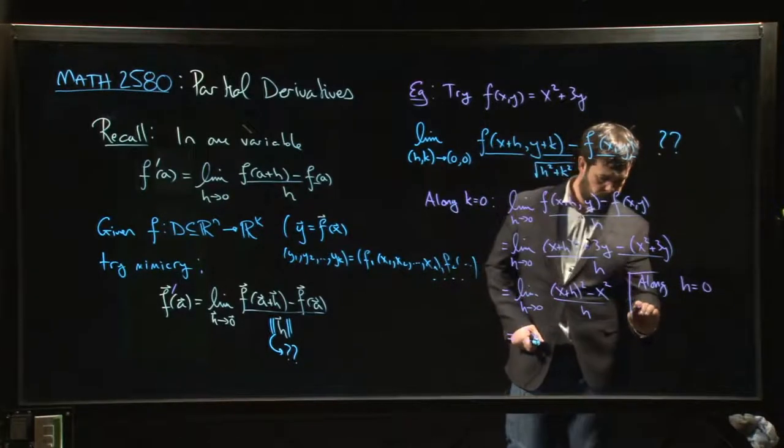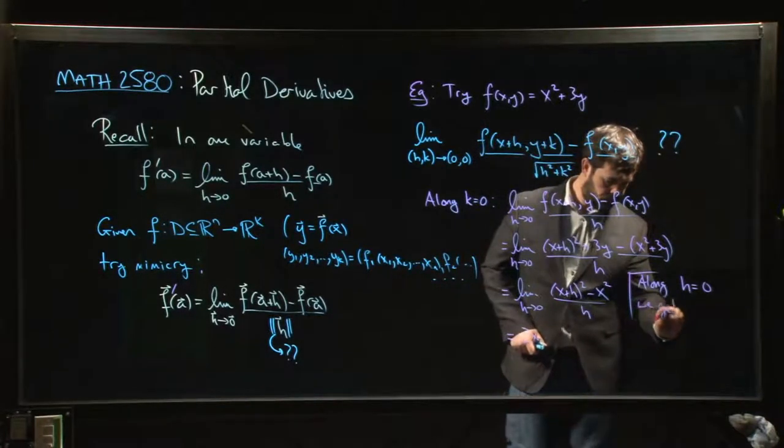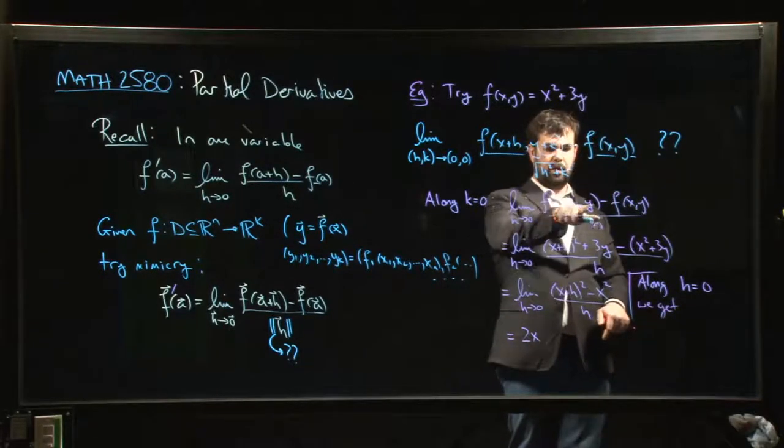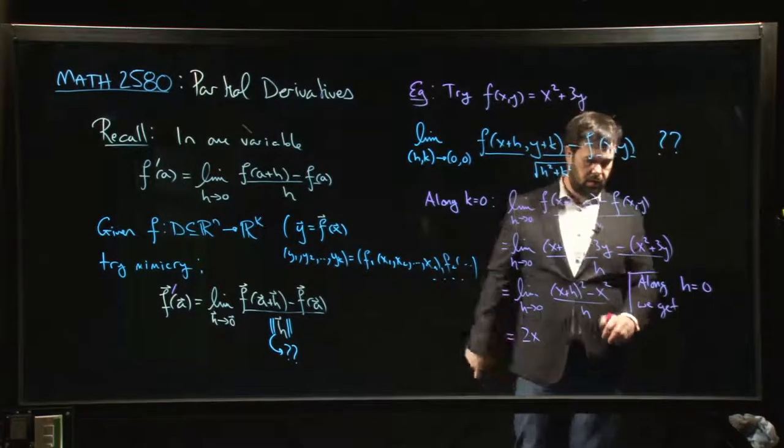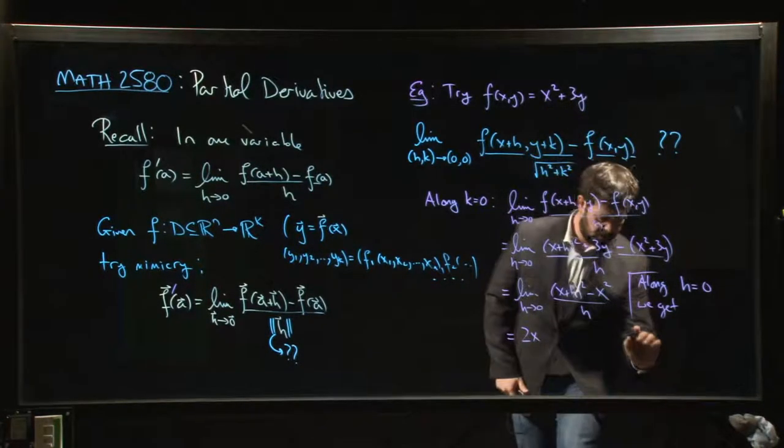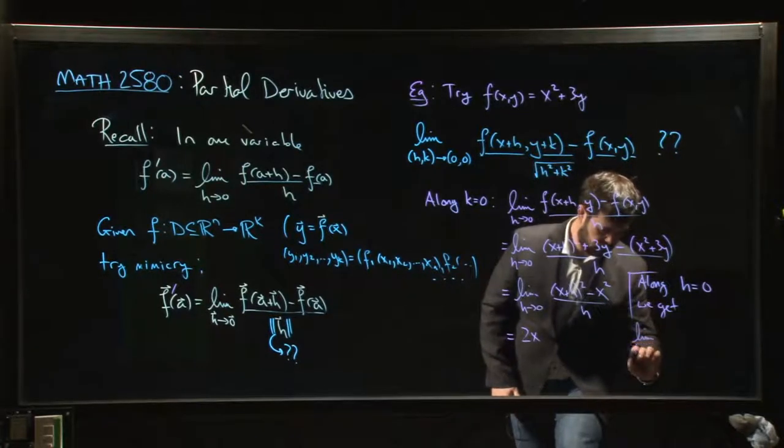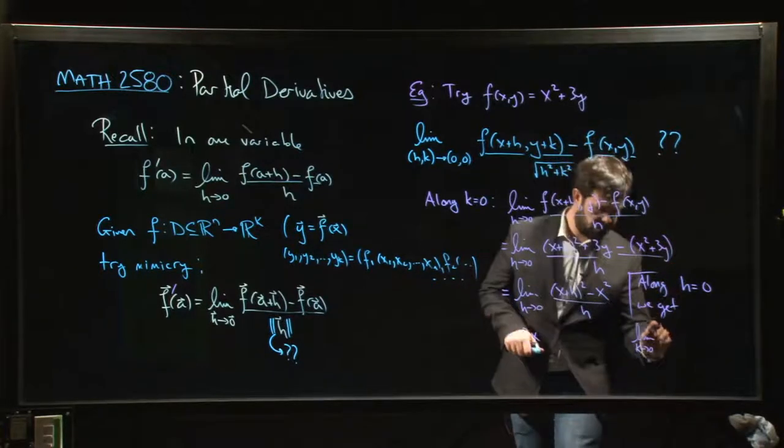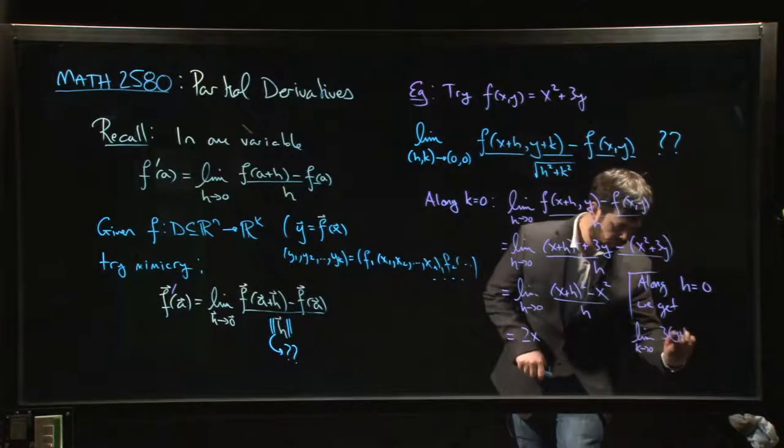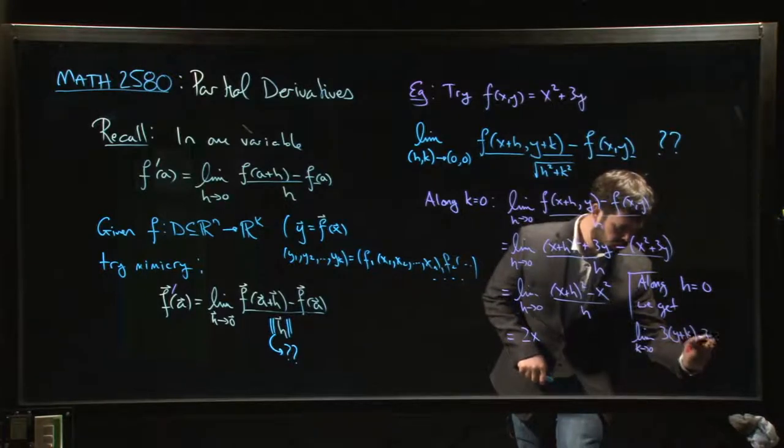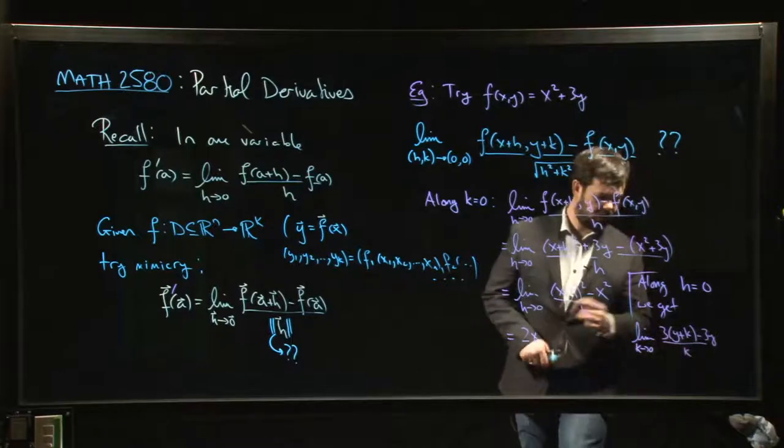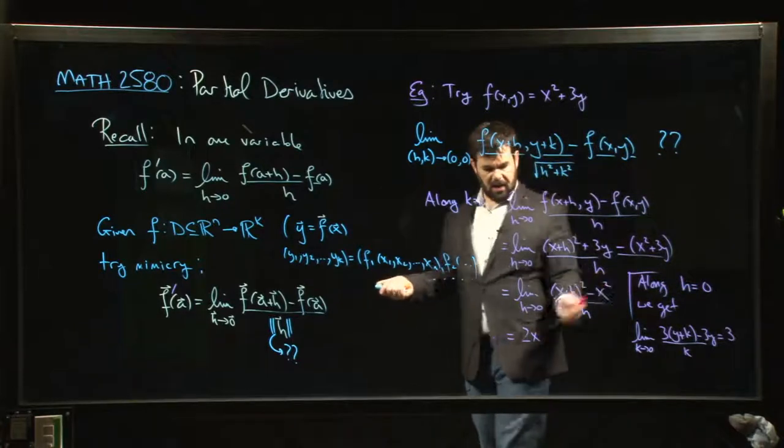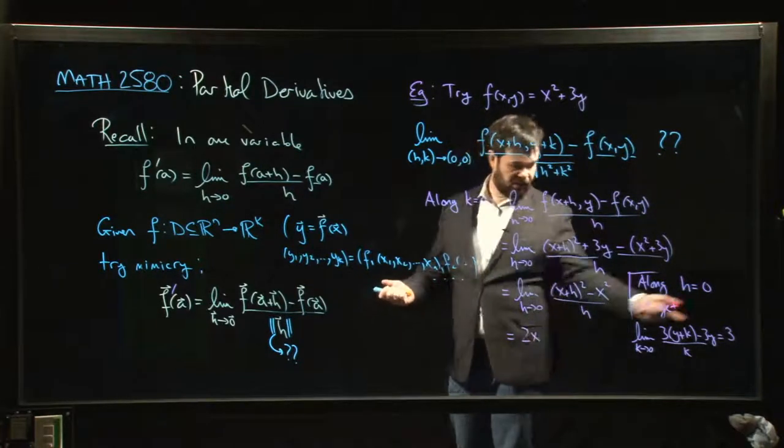And you'll find that what you get—and we'll do kind of the same procedure except this time we put h equal to zero—so we'll have a plus k here, we'll have a zero there, that'll be k on the bottom. You'll get the limit as k goes to zero of—well the x's are going to cancel out—you're going to get 3 times (y plus k) minus 3y over k, and you get 3 for the answer.